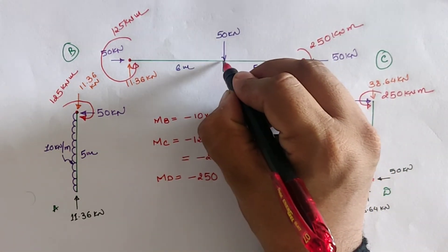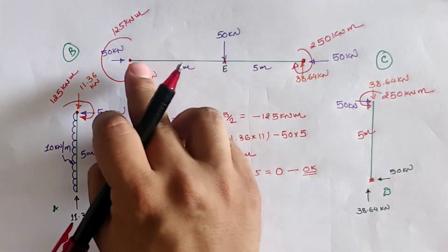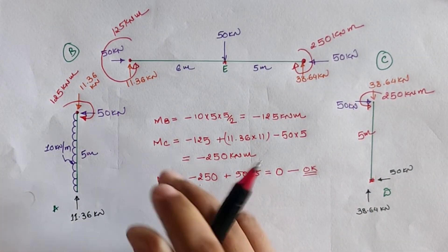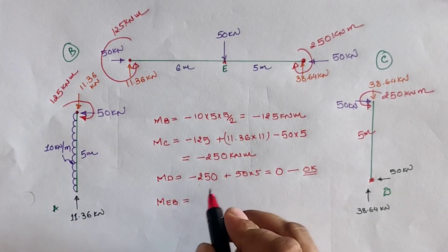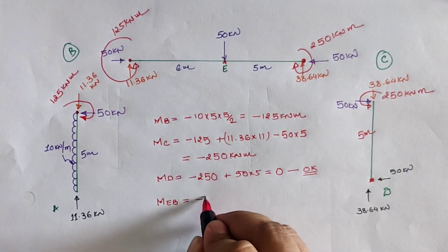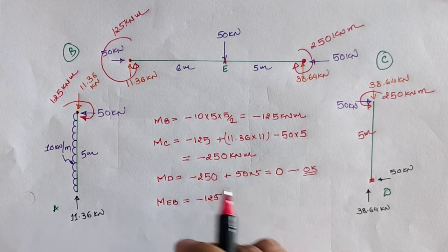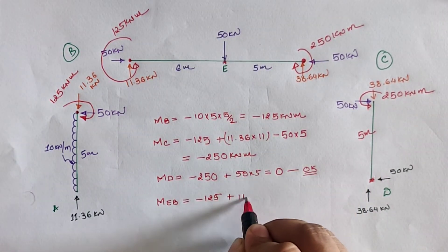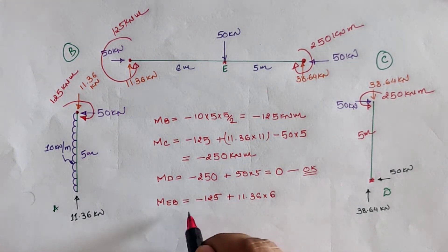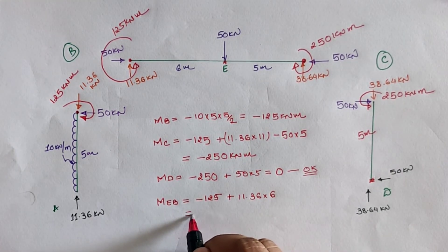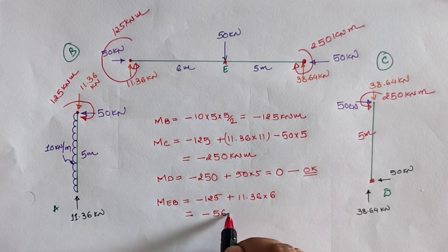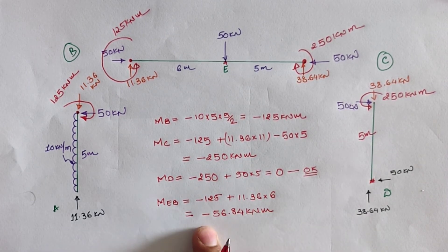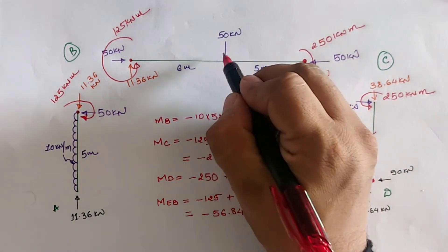At point E, taking the moment in the direction of B: −125 (anticlockwise from B) plus 11.36 × 6 = +68.16 (clockwise). The total value is −56.84 kNm, which is anticlockwise. We apply it as a clockwise moment of 56.84 kNm for plotting purposes.